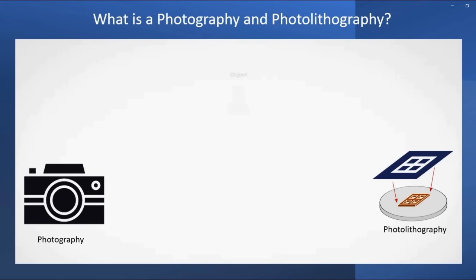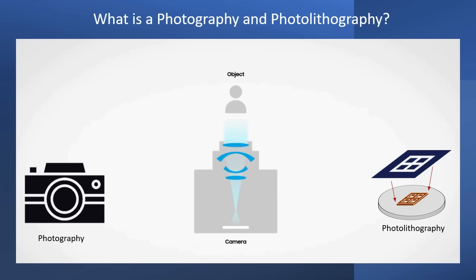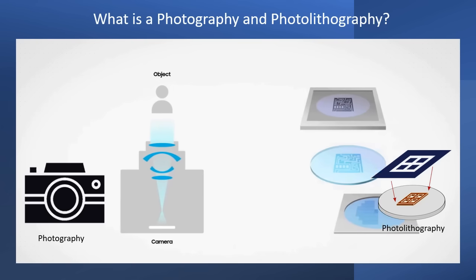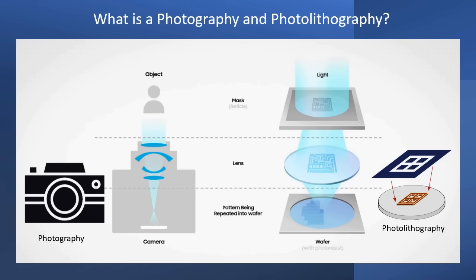Photography uses light and lenses to capture and print an object. In photolithography, we use light and lenses to capture and print an object in a semiconductor manufacturing setup. Complex patterns are printed in a small area by shining light onto a mask, onto a lens, creating a pattern on the photosensitive material. This process is repeated to complete the printing.